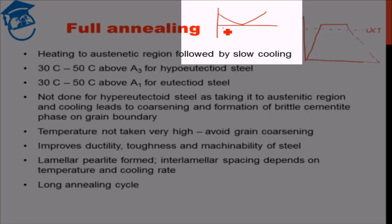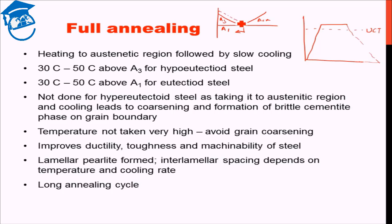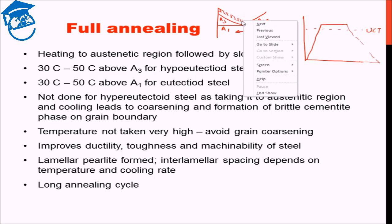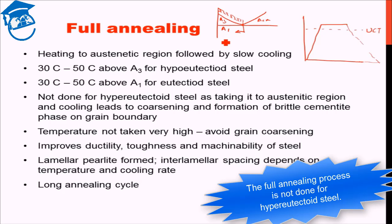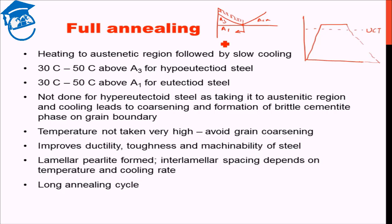On the iron-carbon diagram, this is the eutectoid temperature A1, then A3, and ACM. For hypo-eutectoid steel — that is, below eutectoid composition — we heat it 30 to 50 degrees Celsius above the A3 line, so it's heated in that regime. For eutectoid steel we go 30 to 50 degrees Celsius above A1. Now, this full annealing process is avoided for hyper-eutectoid steel; it is not normally carried out for hyper-eutectoid steel.